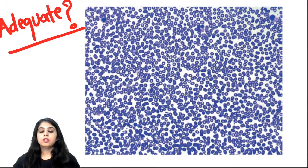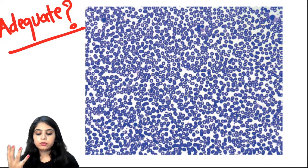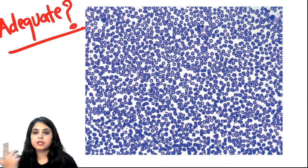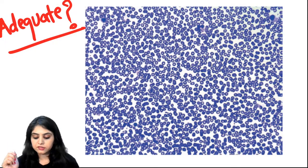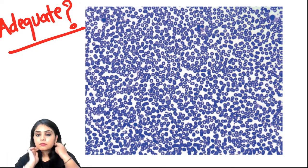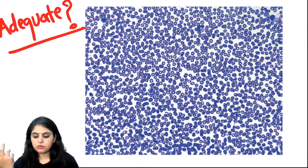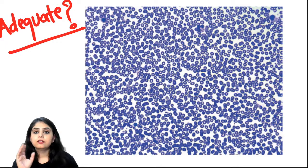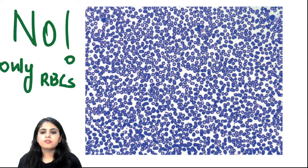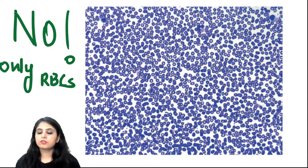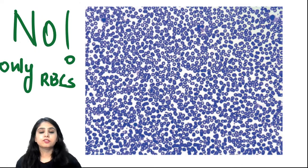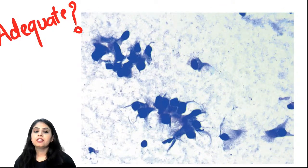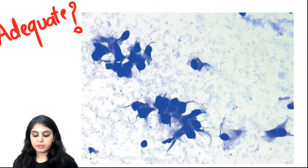Let me test your attention. Is this FNAC slide adequate? The majority correctly say no. Look at this - all you see are red blood cells. The needle hit a blood vessel, you got only blood. There are no follicular cells visible at all. This is inadequate - I can't even confirm this is from thyroid tissue.